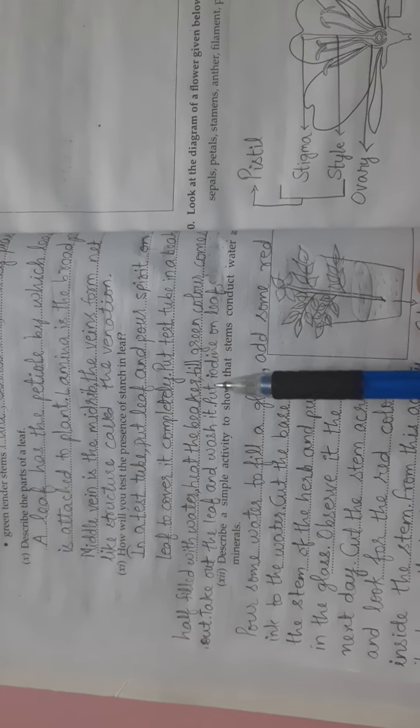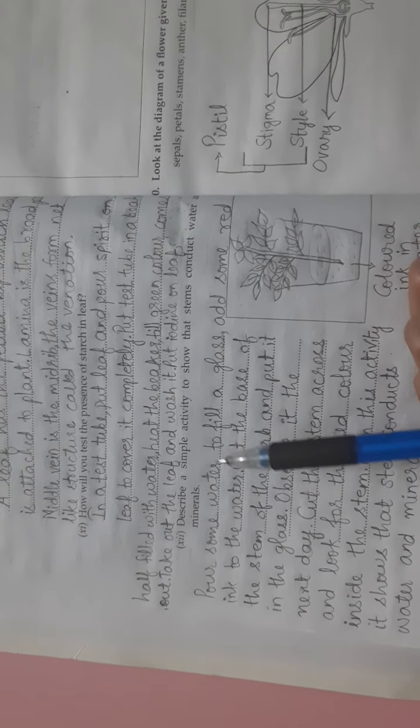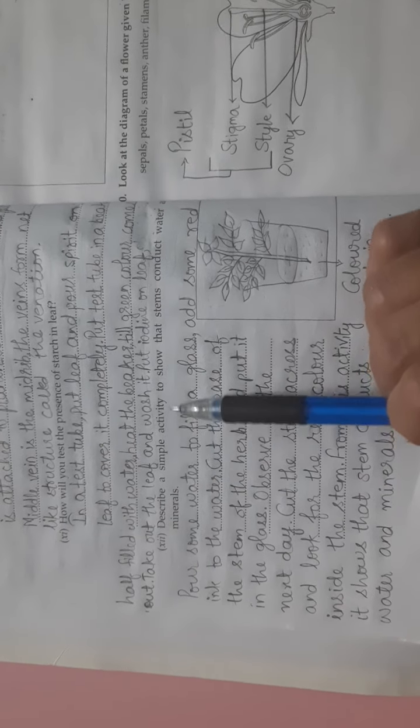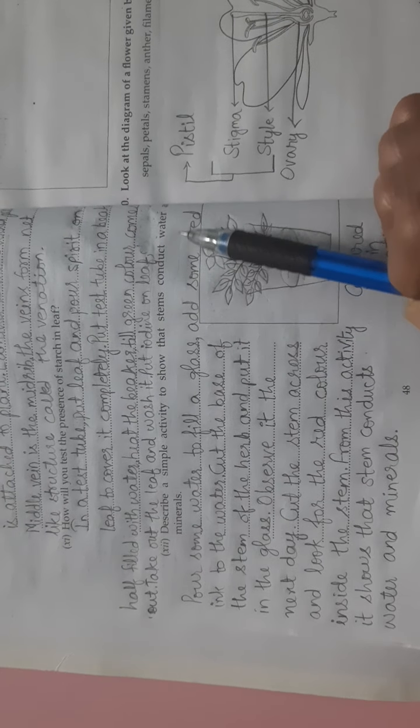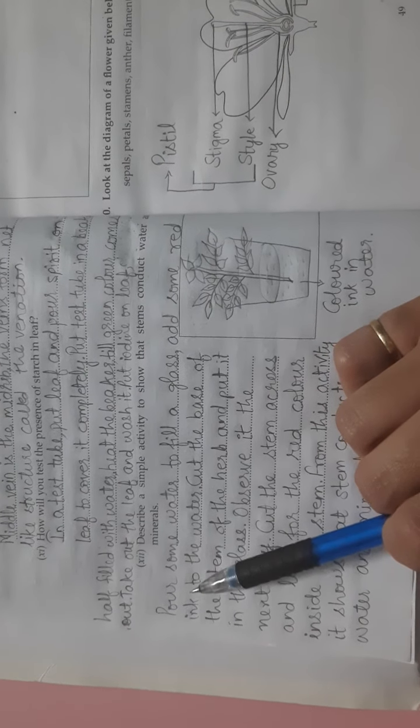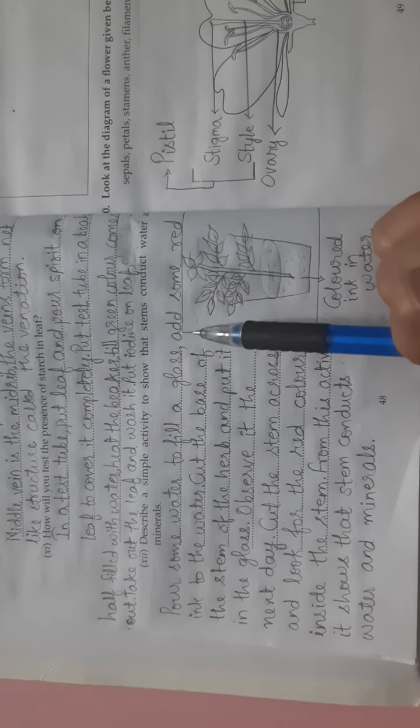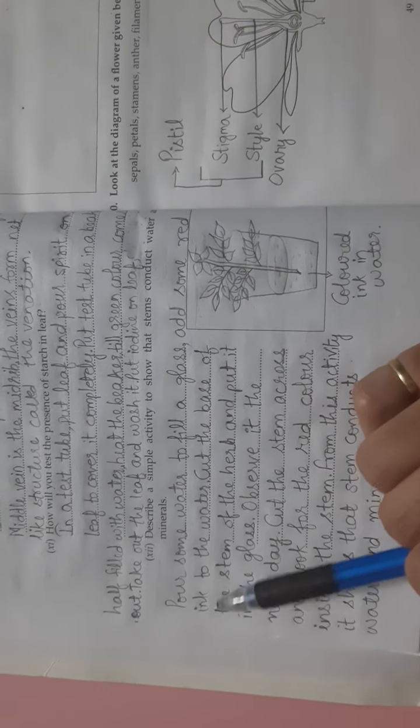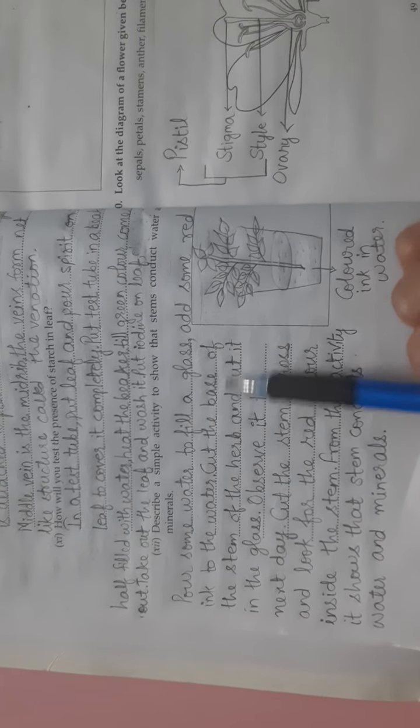Describe a simple activity to show that stems conduct water and minerals. Answer: Pour some water to fill a glass and add some red ink to the water. Cut the base of the stem of the herb and put it in the glass.